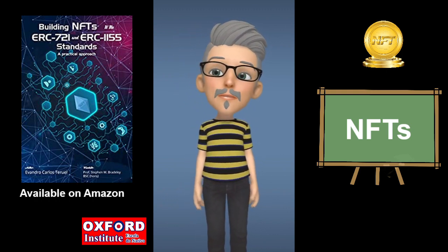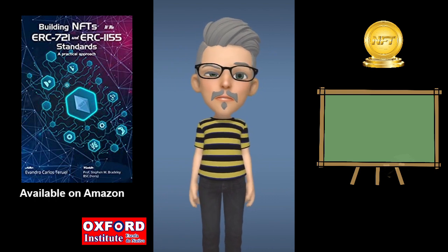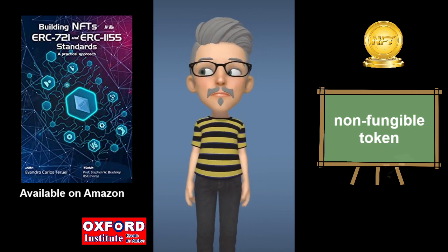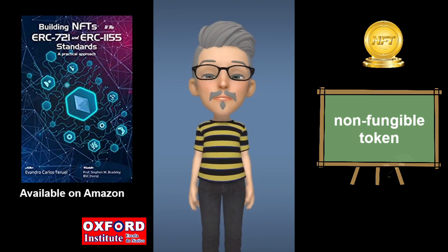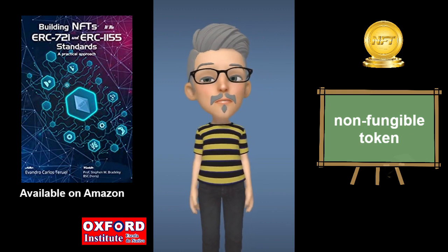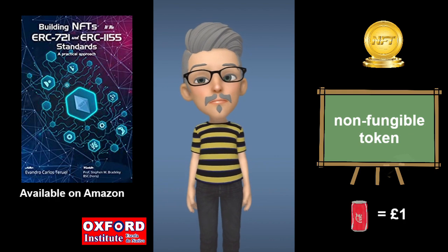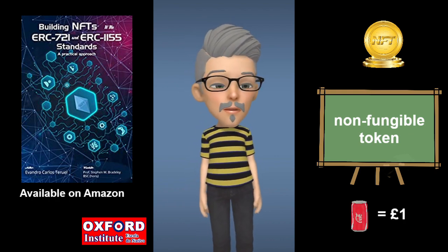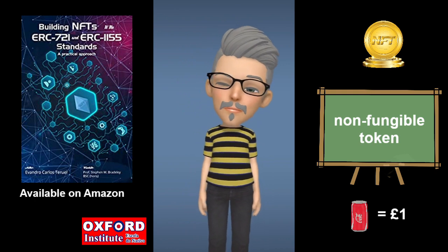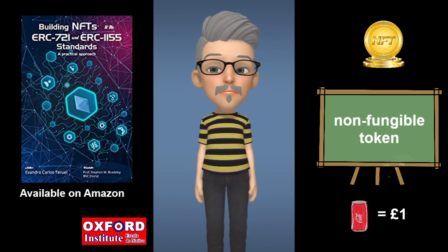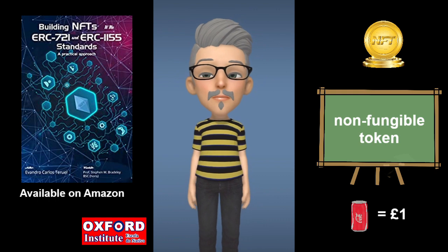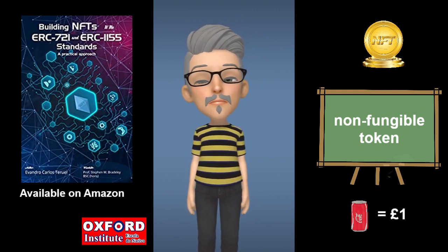An NFT is a non-fungible token. What does non-fungible mean? When something is fungible, it means it can be exchanged for something of the same value. For example, if I go to a shop and buy a tin of Coca-Cola and pay one pound, I've exchanged one pound for a tin of Coca-Cola. The shopkeeper and I are both happy because we believe we've had a good deal. That is what fungible means — the exchange of two things of similar or the same value.